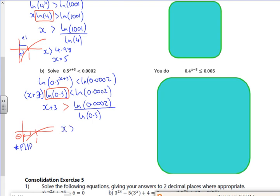Then I'll take the 3 away. So I've got x is greater than log(0.002)/log(0.5) minus 3. And that gives me about 9.29. So we're saying that x could be 10.